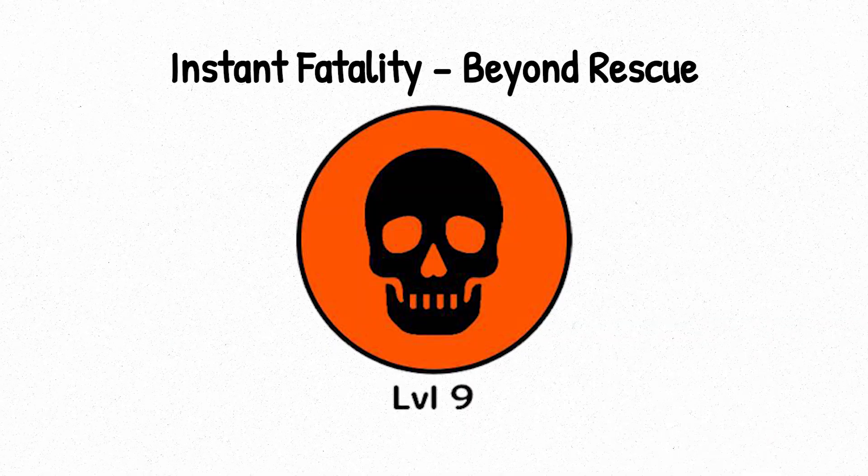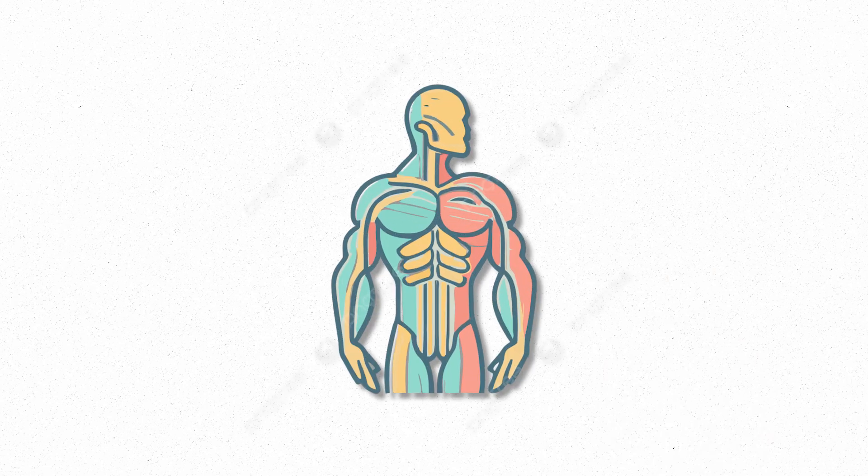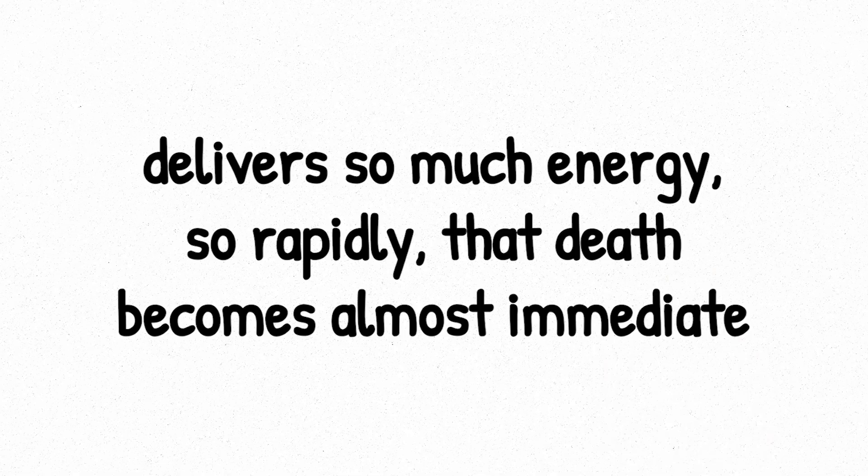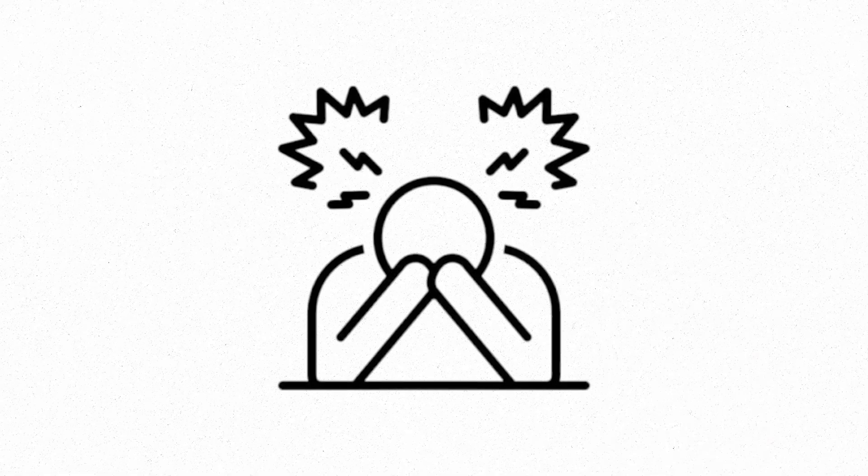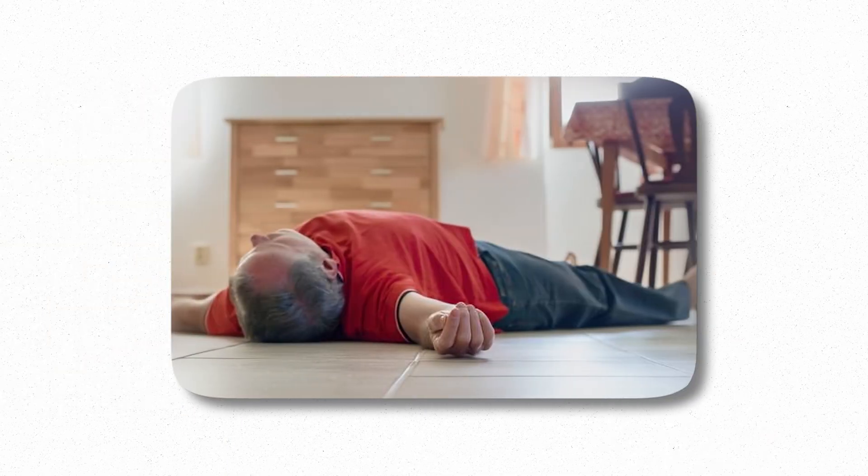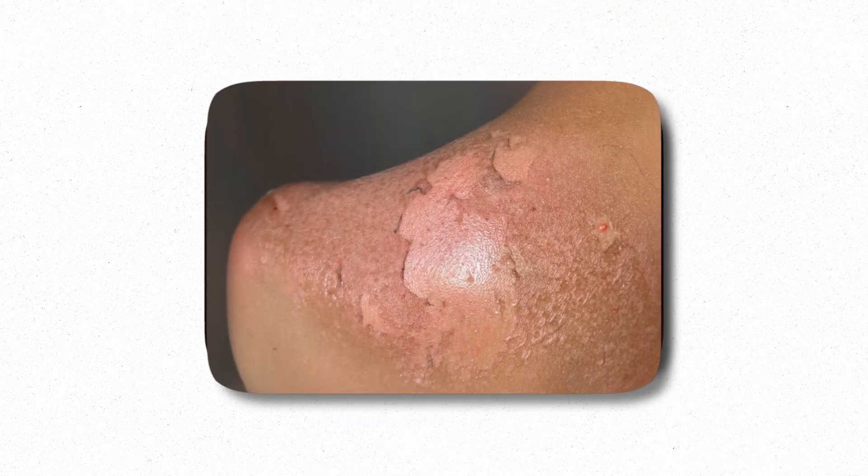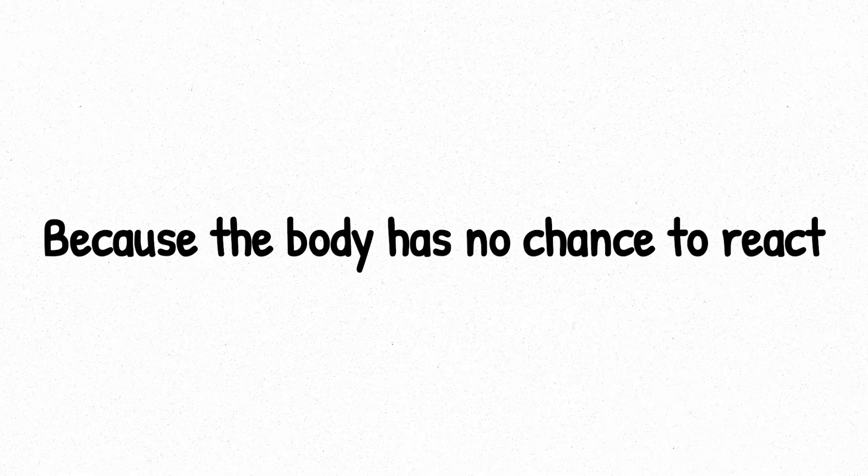Level nine, instant fatality, beyond rescue. Level nine is where the body loses its ability to even begin a response. Radiation exposure between 10 and 30 sieverts, 10,000 to 30,000 millisieverts, delivers so much energy so rapidly that death becomes almost immediate. Not minutes, not hours. Sometimes seconds. At this level, the central nervous system is overwhelmed almost instantly. Victims may collapse within moments, experiencing seizures, unconsciousness, or respiratory failure. The blood vessels rupture. The gastrointestinal tract is obliterated. Skin begins to slough off. There is no time for nausea, no time for symptoms to develop, because the body has no chance to react.